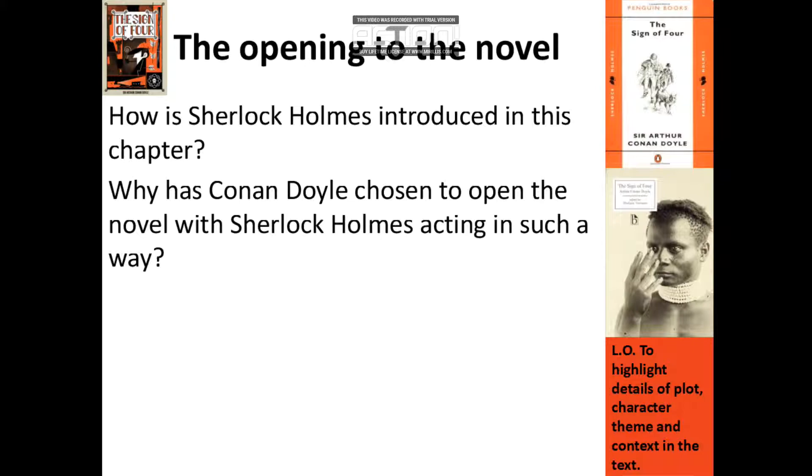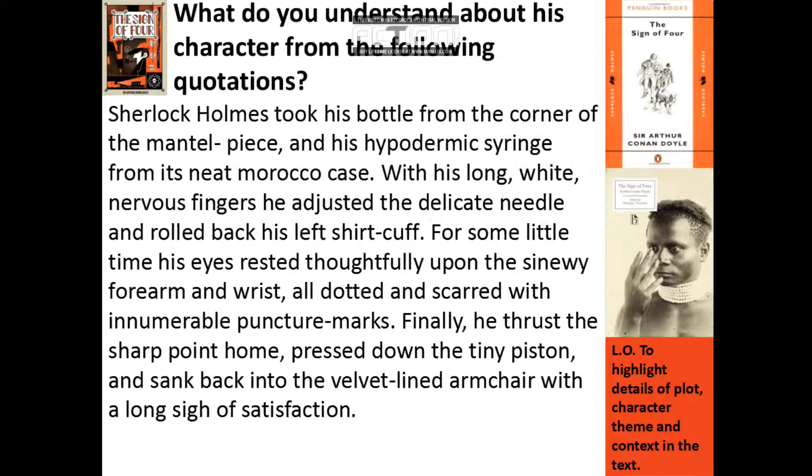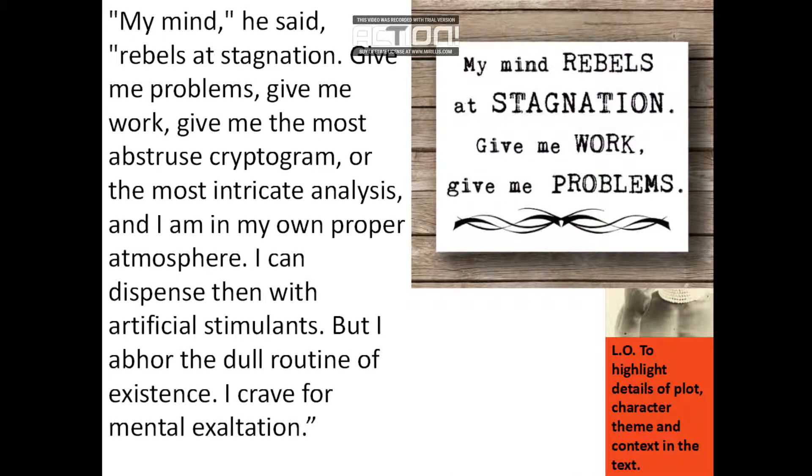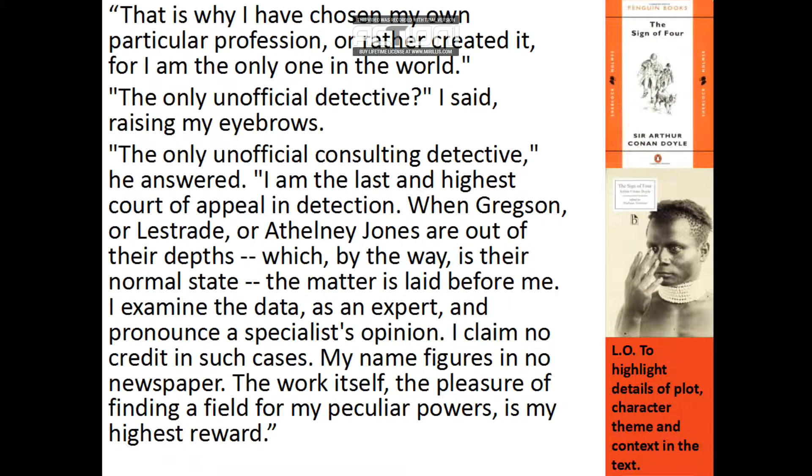So the opening to the novel: How is Sherlock Holmes introduced in this chapter? Why was Conan Doyle chosen to open the novel with Sherlock Holmes acting in such a way? So what do we understand about his character from the following quotations? Sherlock Holmes took his bottle from the corner of the mantelpiece and his hypodermic syringe from his neat morocco case, with his long, white, nervous fingers. And here is the quote: 'My mind,' he said, 'rebels at stagnation. Give me problems, give me work, give me the most abstruse cryptogram or the most intricate analysis, and I am in my own proper atmosphere. I can dispense then with artificial stimulants. But I abhor the dull routine of existence. I crave for mental exaltation.'